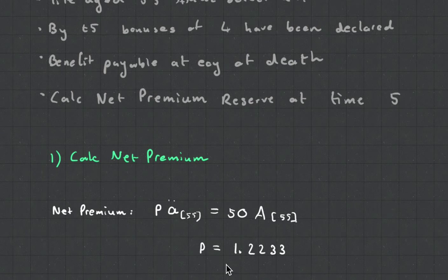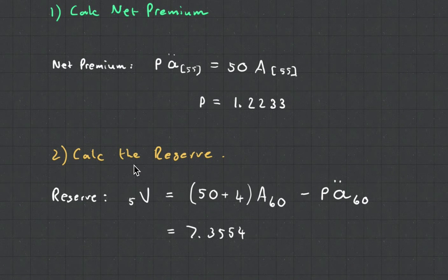We've got our bonus. We then calculate the reserve using that premium amount including the bonus. And then we get the reserve.